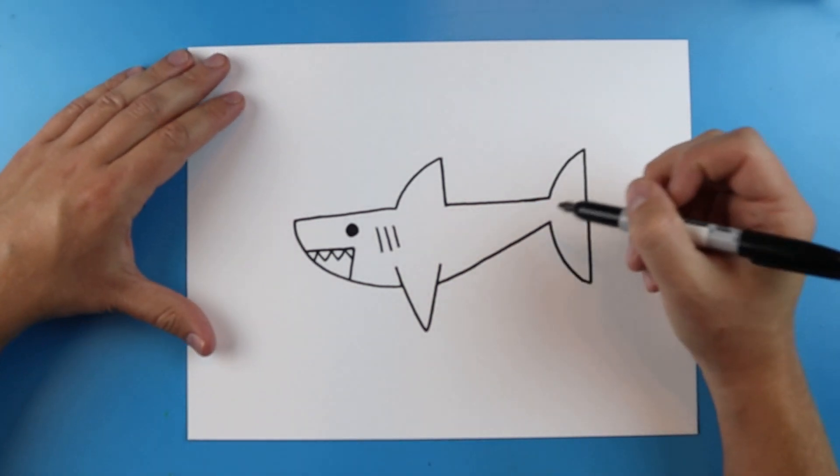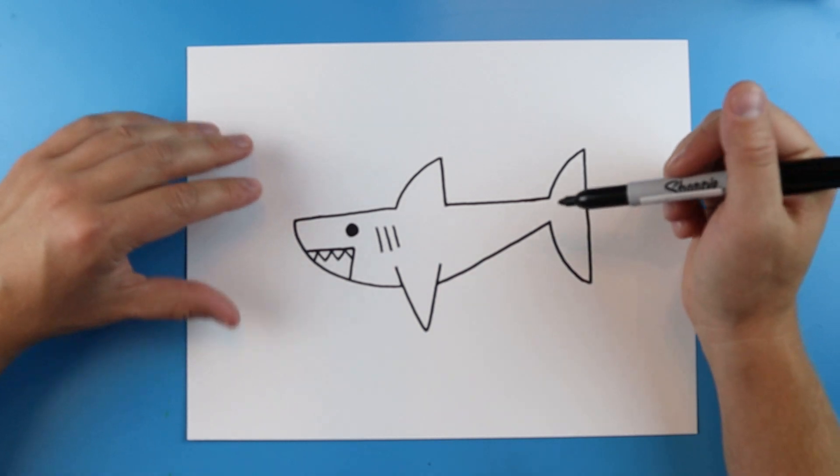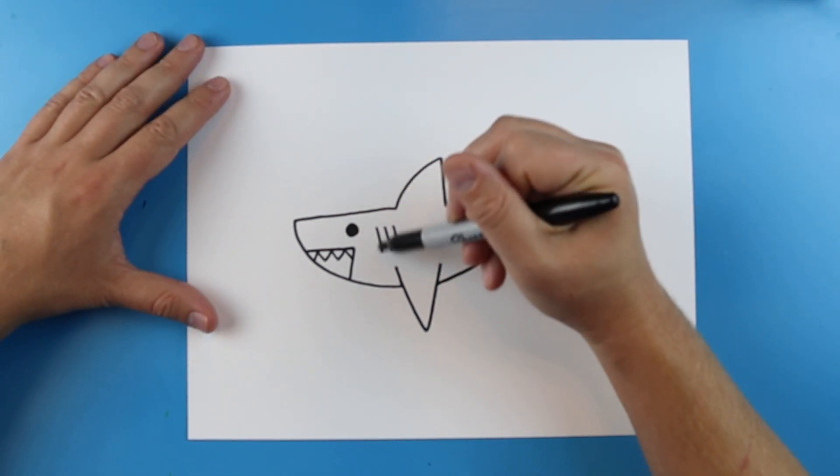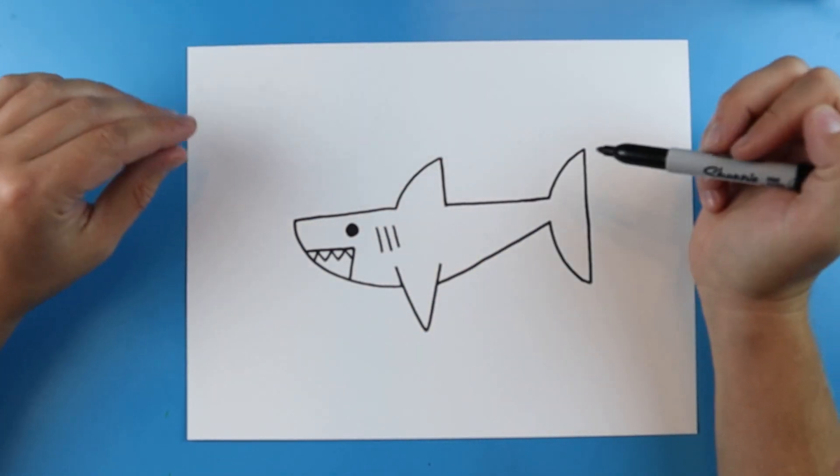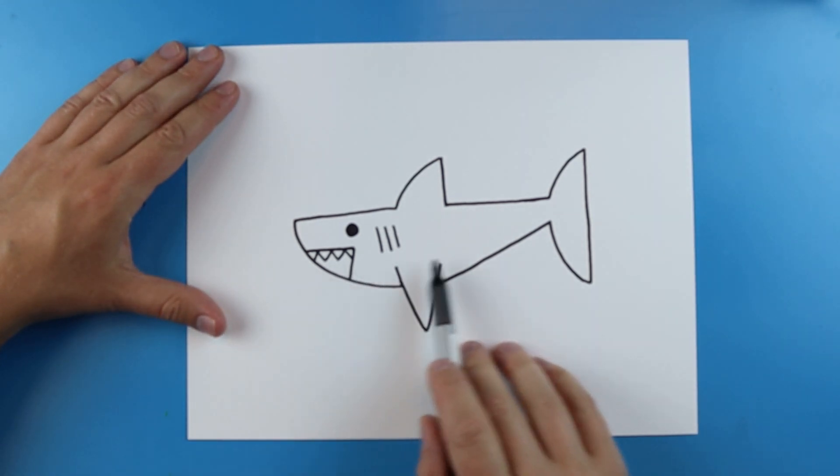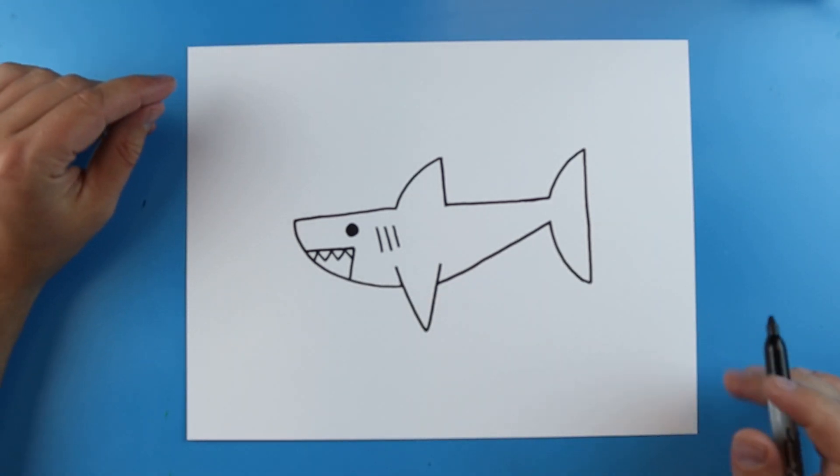Now when you color this, you can color your shark any color. You can do gray, you can do blue, you can do some red on the gills, you can color the mouth black. Some people even like to leave the bottom of the shark white. There's lots of things you can do.